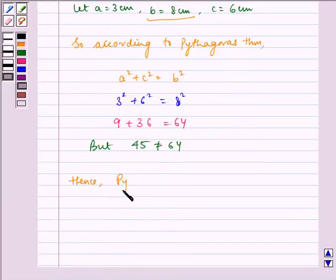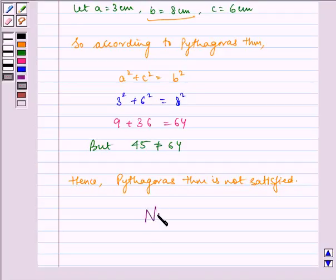Hence, Pythagoras theorem is not satisfied. So the given triangle is not a right triangle. Therefore, the required answer is NO.